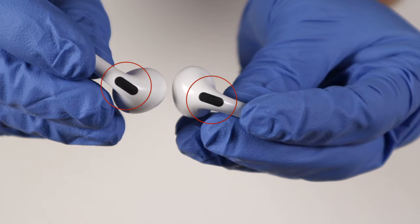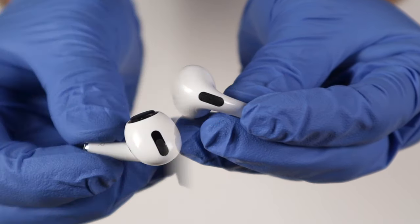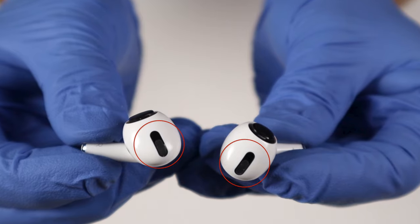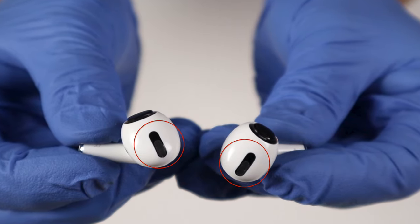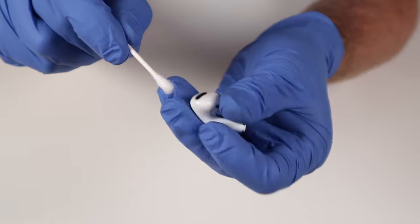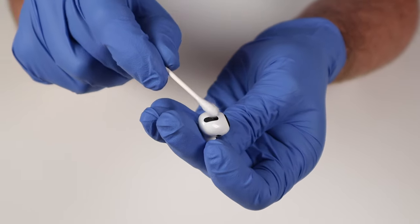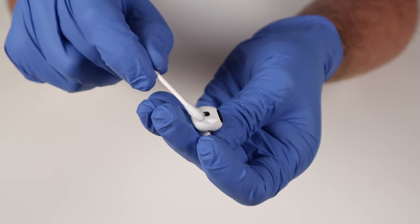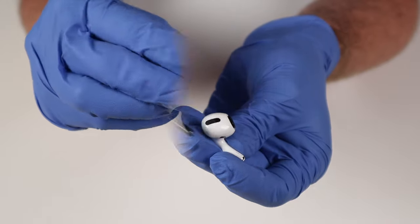Let's start with the wire mesh. The wire mesh is the cover for the microphones that are used for active noise cancellation and transparency mode. Clean off the wire mesh with a dry cotton swab. If you see that the mesh is still dirty or clogged, you can gently brush it.